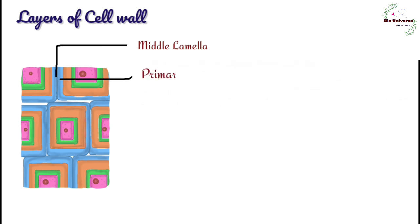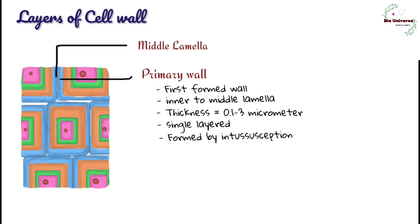B. Primary wall. It is first formed wall of the cell. It is laid inner to middle lamella. Wall is thin with thickness 0.1 to 3 micrometers. It is single-layered. Enlargement and thickening of primary wall occur by interception or addition of materials inside the wall. Cellulose is lower in amount at 20%. Cellulose microfibrils are shorter at 0.5 to 0.7 micrometers and are loose and wavy. Hemicellulose and protein content is high. Matrix has high hydration, up to 60%.